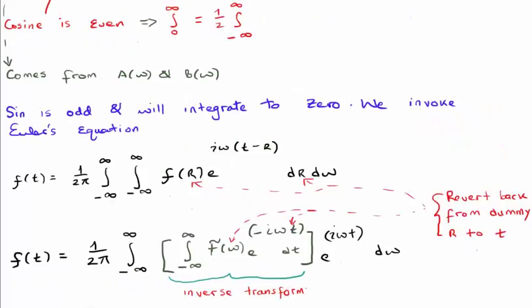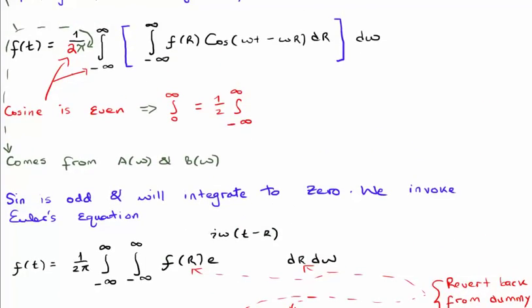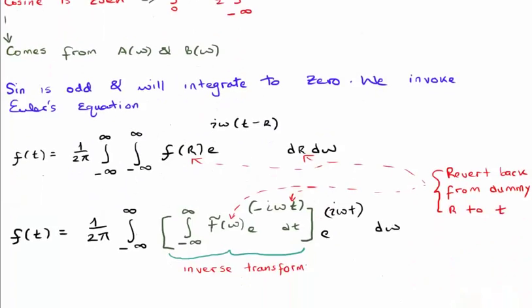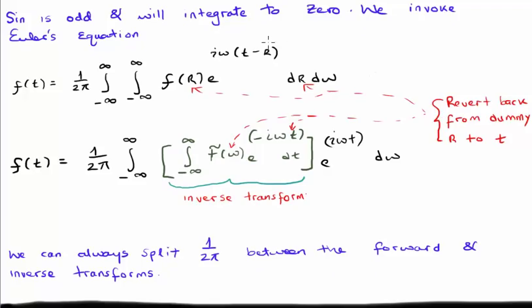Finally, using the trick I discussed earlier on in the video, where we introduce the sine which is going to integrate to 0 anyway, we can now incorporate Euler's equation and move from trigonometric cosine and sine to complex exponentials. Note the importance of our dummy variable τ, which if it had been left at t, wouldn't have allowed us to get to this particular expression.